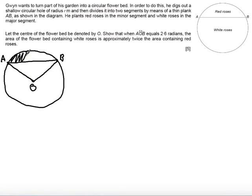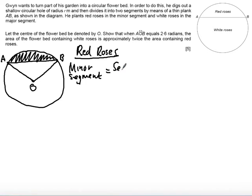What I'm going to start off by doing is trying to find the area of the minor segment. In other words, I'm going to work with the red roses. Now this minor segment is going to equal, what I'll have to do is work out the whole sector area, sector AOB, and subtract the triangle AOB.